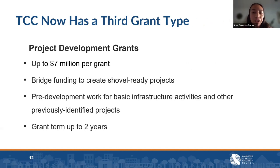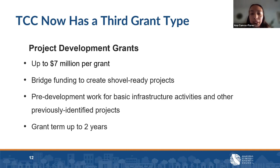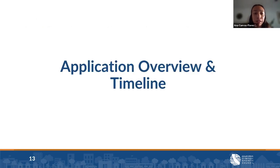The round five draft guidelines present a new grant type known as the project development grant. This grant is up to $7 million per grant, with a term up to two years, providing bridge funding to create shovel-ready projects — including pre-development work for basic infrastructure activities. The technical assistance team does not yet know the role that TA will play with this grant, so this workshop will focus primarily on the planning and implementation grants. For questions about the project development grant, please reach out to SGC.